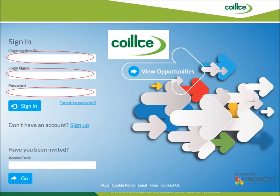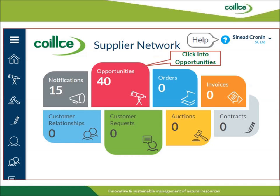Once you have completed the registration process, you can launch the Paractus Web Portal by clicking on the web link www.paractusplaza.com on Quilch's website. You will then need to enter your login details to access the web portal. Click on the Opportunities button to view your tendering opportunities.